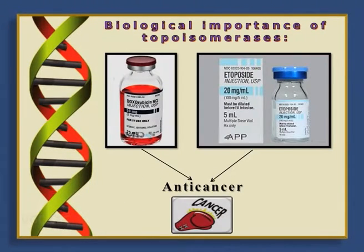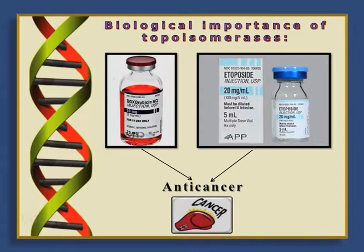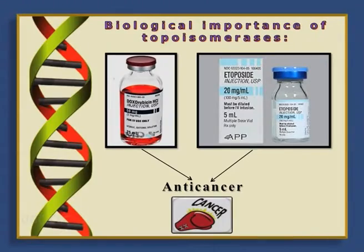Certain compounds like doxorubicin and etoposide inhibit topoisomerases. Since they inhibit topoisomerases, they can be used as potent anti-cancer agents, and these different compounds are regularly used for the treatment of cancerous cells.